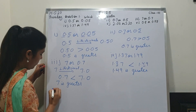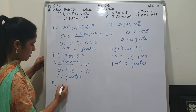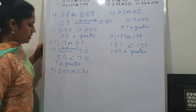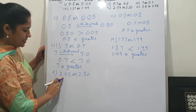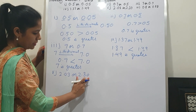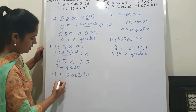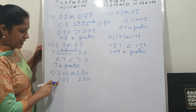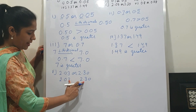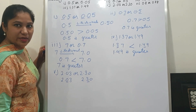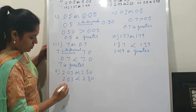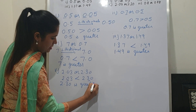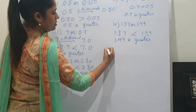Fifth point, student: 2.03 or 2.30. Now see decimal places — like decimal, two decimal places after point, two decimal places — both are same. So these are like decimals. We will see from left hand side: 2, both are same. After point: here is 0, here is 3. Which one is greater? 3. 3 is greater than 0. So 2.30 is greater.